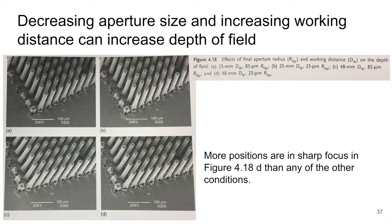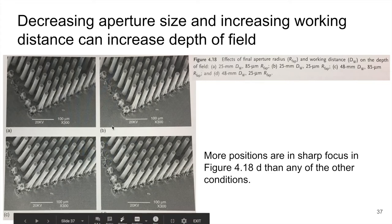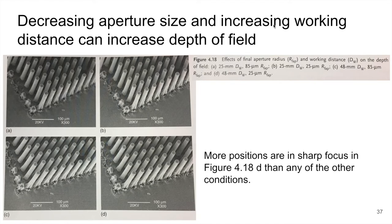All right, so let's look at some examples of images taken with some different settings here then. So these four images, A, B, C and D have decreasing aperture size and increasing working distance. So you see the different combinations. So A has a working distance of 25 millimeters and an aperture opening of 85. Then we go all the way up to a 48 millimeter working distance and decrease the aperture opening radius to 25. So we basically go through with this. So we would expect that these increases in the depth of field under these conditions would increase the depth of field and give us more of that sharp focus on different planes.